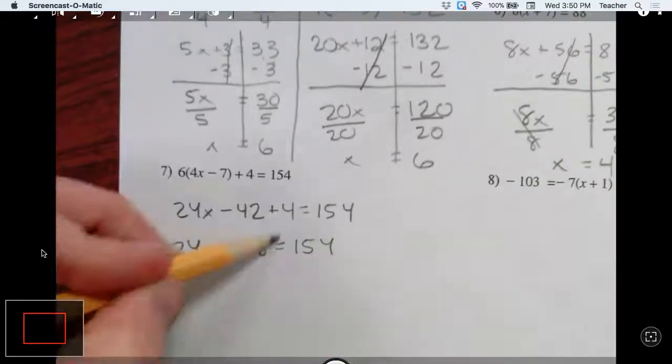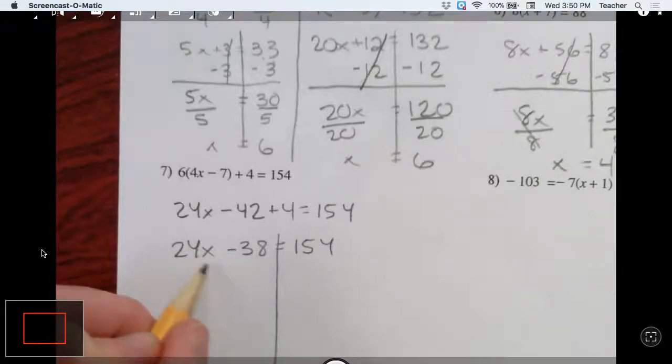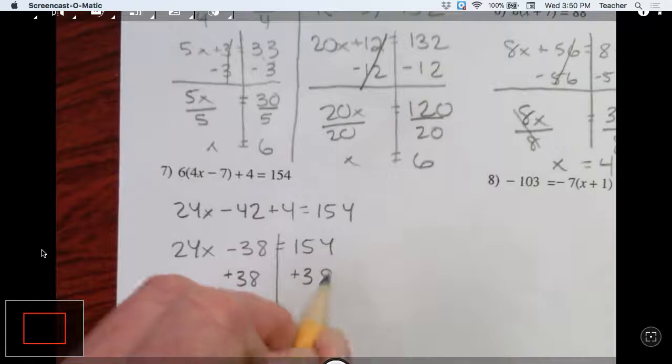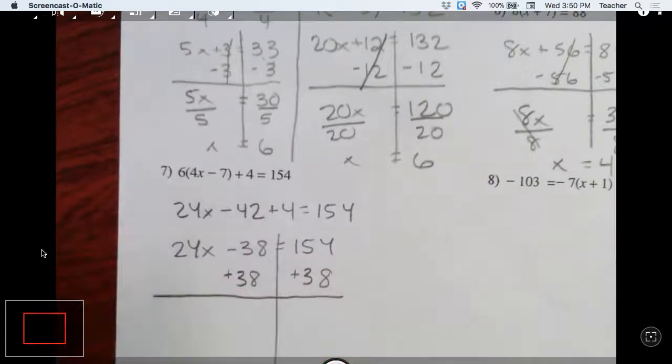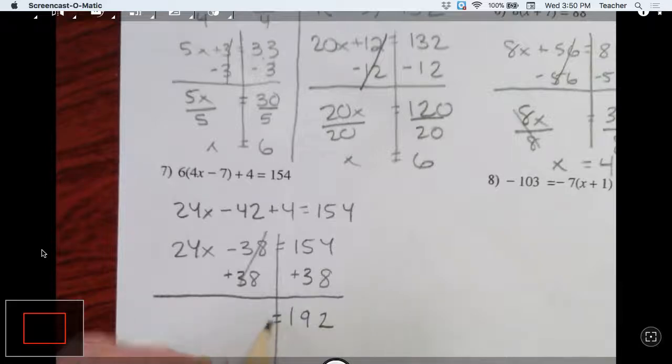I'm going to go ahead and simplify this side. Now we have to start undoing the left side to get x by itself. So we're going to add 38.